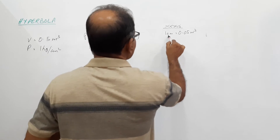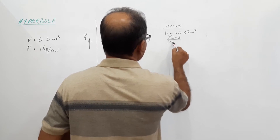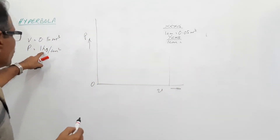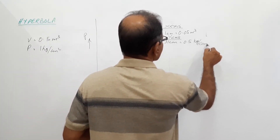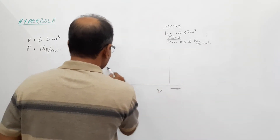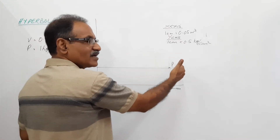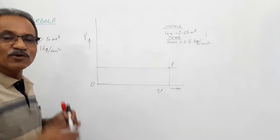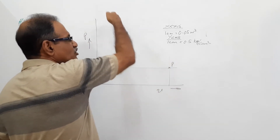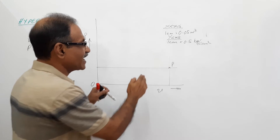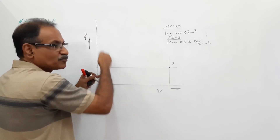For the Y-axis, 1 centimeter equals 0.5 kilogram per centimeter square. So our point is 2 centimeters away. Do you know why I have placed the point this far to the right? Because you are asked to draw the curve when the gas is compressed — when the gas is compressed, the pressure will increase and the curve should go like this. If you take the point here, you will not get space for the compression.